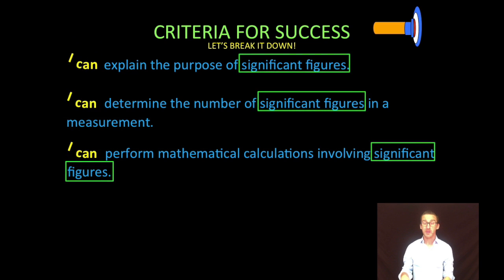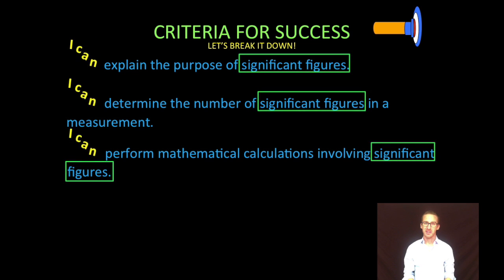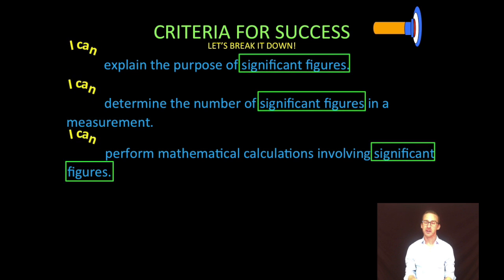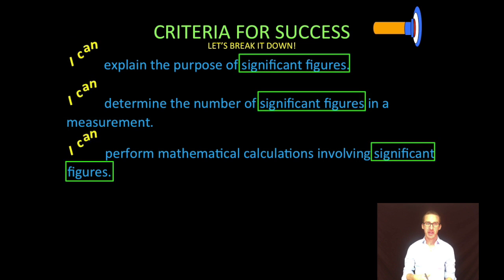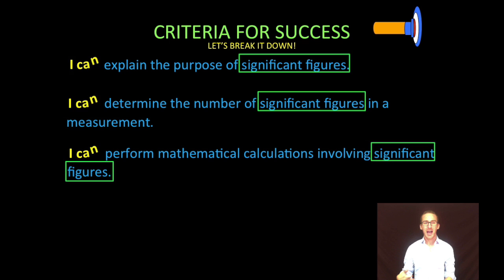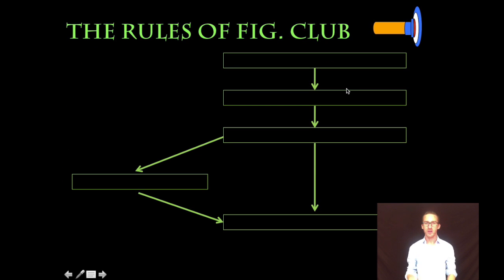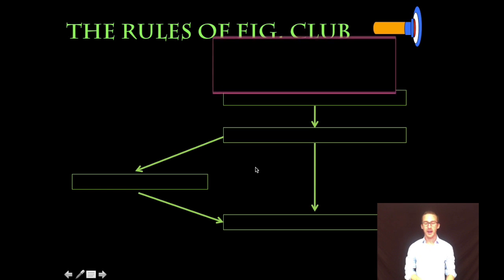As we think about the purpose of significant figures, it's really going to tell us how precise the piece of equipment is that we're using in our lab. The next thing we need to do is determine the number of significant figures in a measurement. We're not always going to be able to do a lab, or maybe we're trying to interpret data from someone else. How can we look at their measurements and tell how precise their equipment was? As we try to determine the number of significant figures in a measurement, it's just a series of rules.